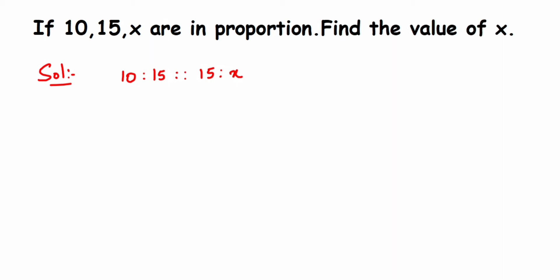We're going to use a formula: product of means equals product of extremes. What are means? Means are the ones at the center—here, 15 and 15. The ones at the extreme ends, 10 and x, are called extremes.